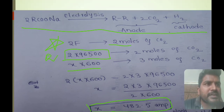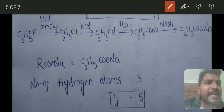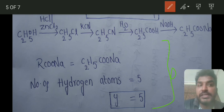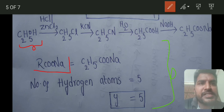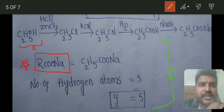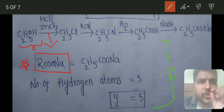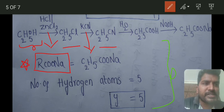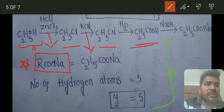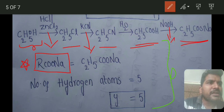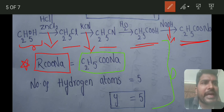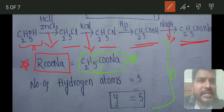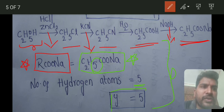The second part is finding the number of hydrogen atoms in RCOO-Na. Alcohol with HCl and zinc chloride — Lucas reagent — forms ethyl chloride. When treated with KCN, it forms ethyl cyanide via nucleophilic substitution. Cyanides on hydrolysis produce carboxylic acids, and with NaOH produce sodium salt. So the sodium salt obtained is C₂H₅COONa. In C₂H₅COONa, there are 5 hydrogen atoms, so Y = 5.